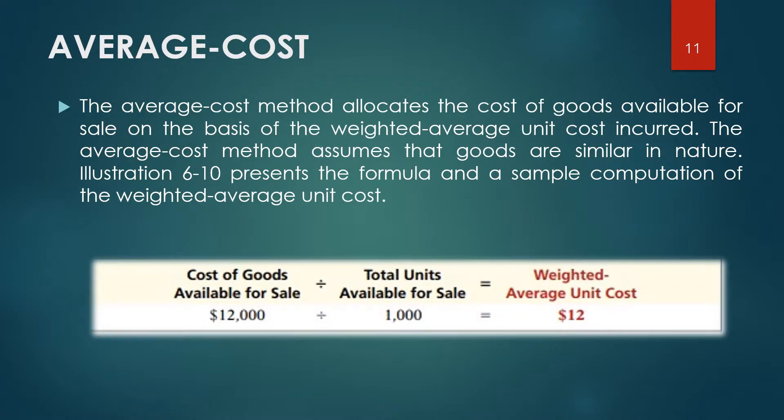The average cost method allocates the cost of goods available for sale on the basis of the weighted average unit cost incurred. The average cost method assumes that goods are similar in nature. Illustration 6-10 presents the formula and a sample computation of the weighted average unit cost.